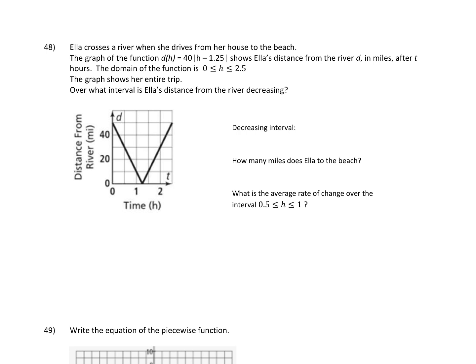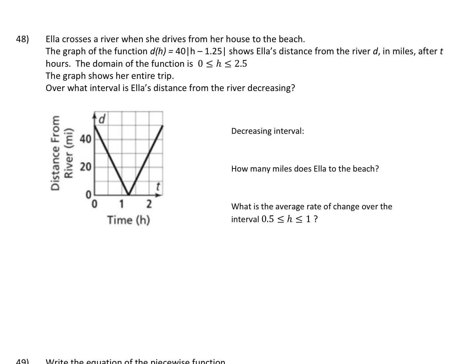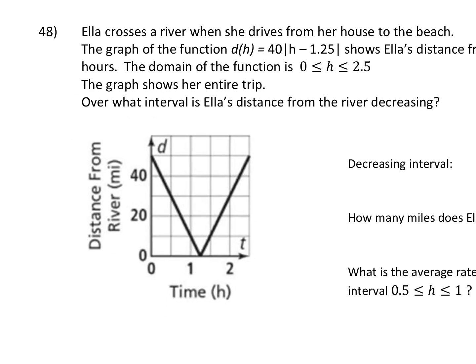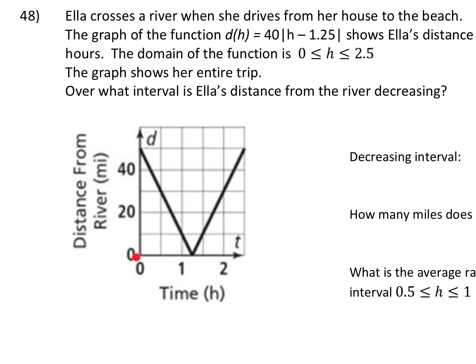Before we start to answer any questions, there's a lot of information — let's just make sense of it. I'm going to zoom in on this graph a little bit so we can understand what we're looking at. Ella crosses a river when she drives from her house to the beach. Our x-axis is time passing. As time passes she's driving, so at the start of her trip she is up here — the y-axis is counting by 10, 20, 30, 40, and I'll write in 50 as a reminder. So she is 50 miles from the river, and the graph tells us this is distance from the river.